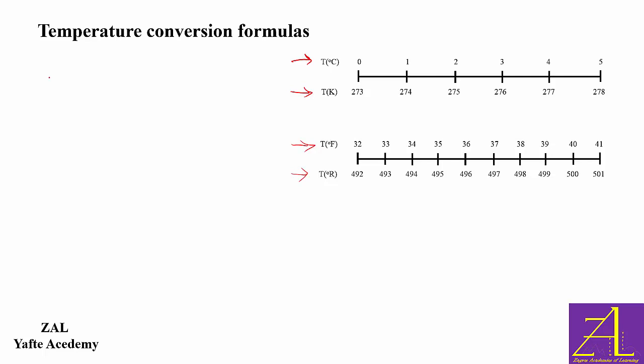Let's agree that when we write T, we mean the temperature that we read on the scale. When we write delta T, we mean the distance between two readings, which is a degree.